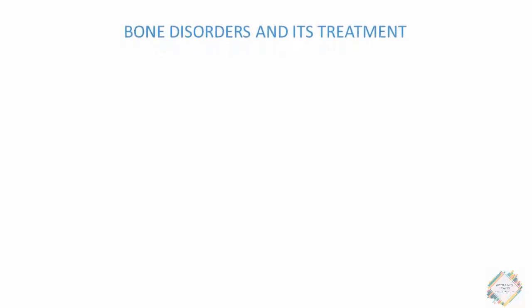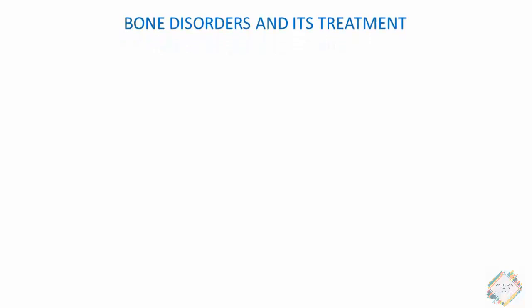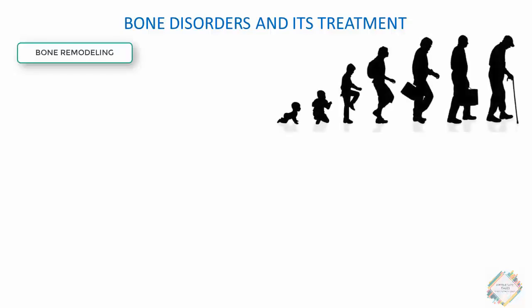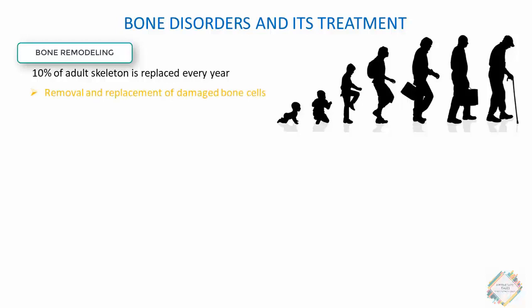Today we'll be talking about bone disorders and their treatment. First, we'll discuss bone remodeling. Throughout our life, bone is continuously remodeled, with about 10% of the adult skeleton being replaced each year. The basic purpose of this bone remodeling is to remove and replace damaged bone and to maintain calcium homeostasis.